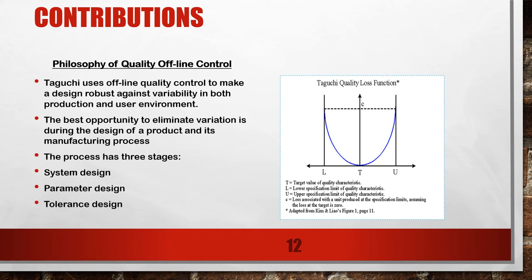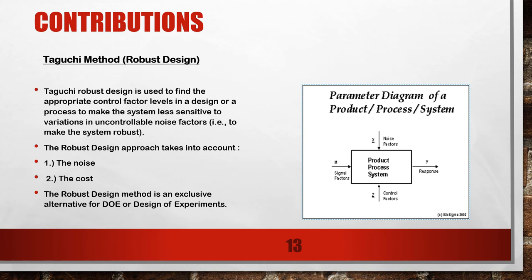Taguchi realized that the best opportunity to eliminate variation in the final product quality is during the design of a product and its manufacturing process. The process of offline quality control has three stages: system design, parameter design, and tolerance design, which is illustrated in the diagram shown on the screen.